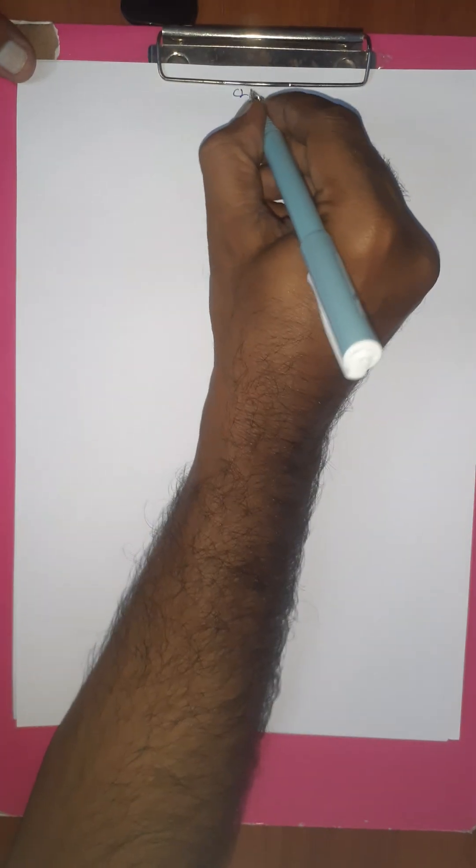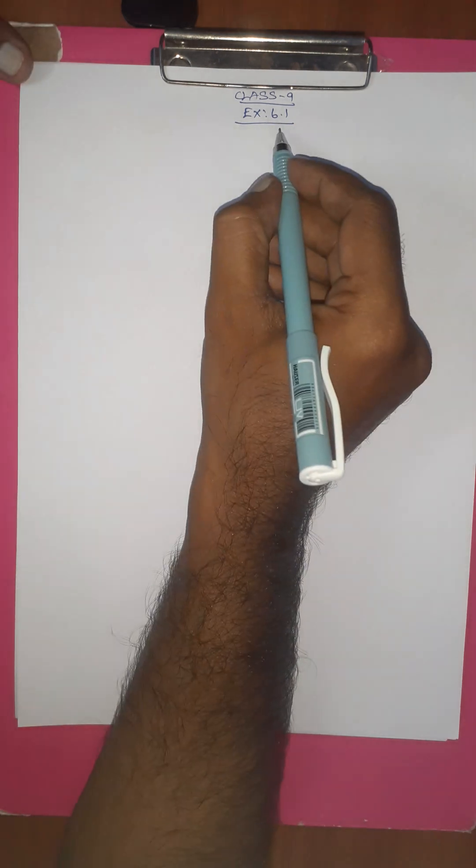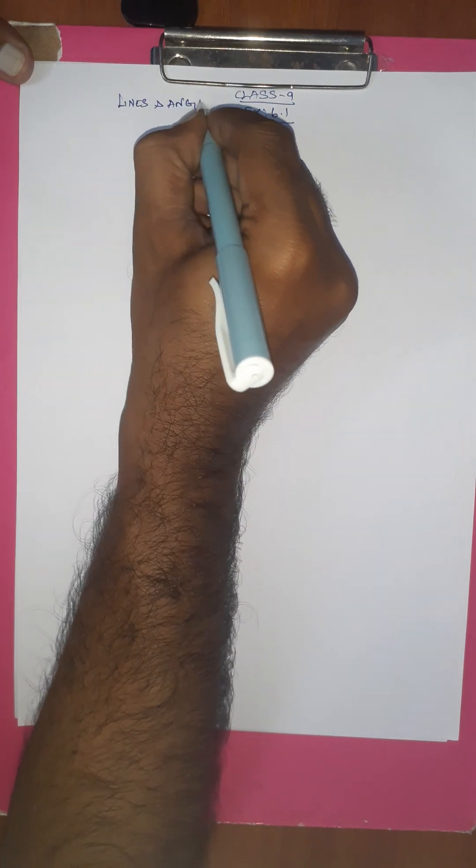Hi students. I am talking about Self Sharp. I hope all are fine. I am going to talk about Class 9th Exercise 6.1, question number 1 and question number 2. This is the Lines and Angles portion, Exercise 6.1, first question.